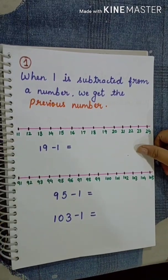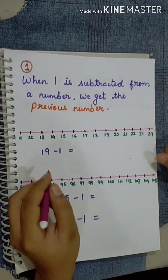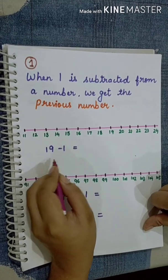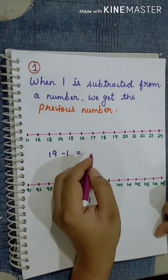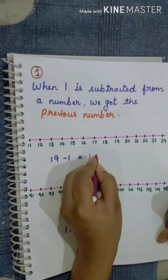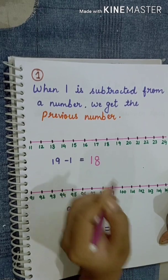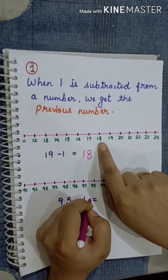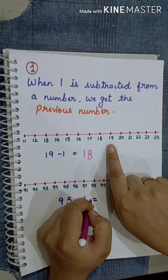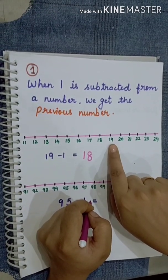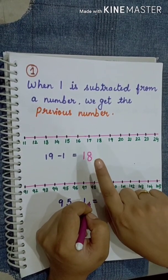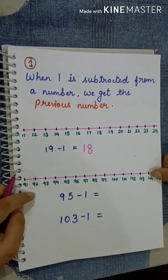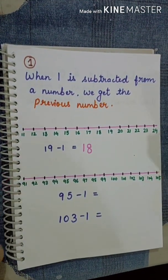So this is proof that if we subtract 1 from any number, we will get the previous number. The previous number of 19 is 18, and when we subtracted 1, we got 18. Now let's take another example.